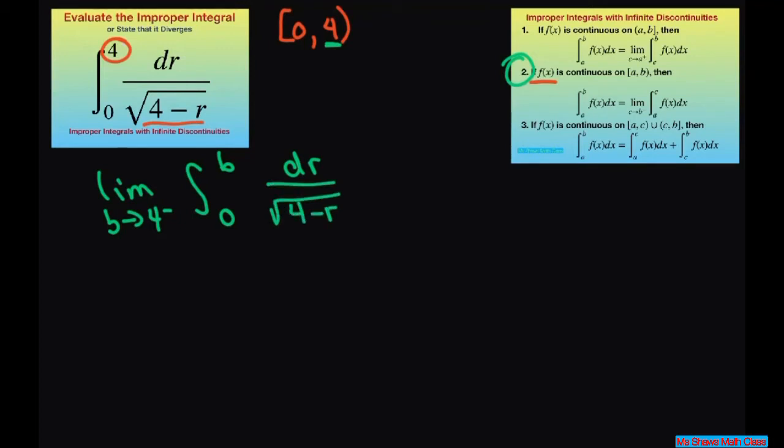Now using u-substitution, I'll do it on the side here. We'll let u equal square root of 4 minus r. So that's going to be 4 minus r to the power of 1 half.